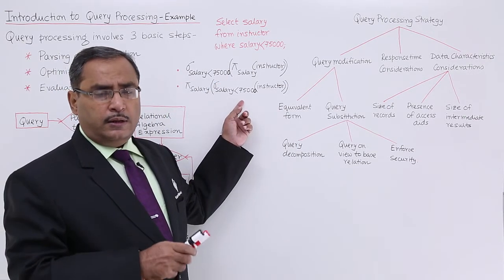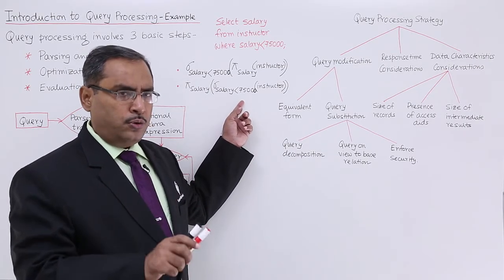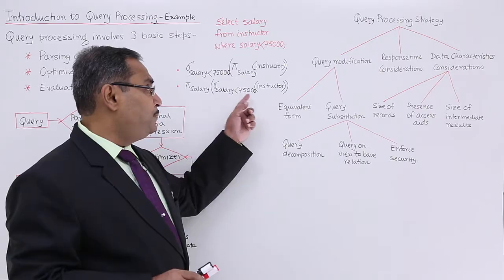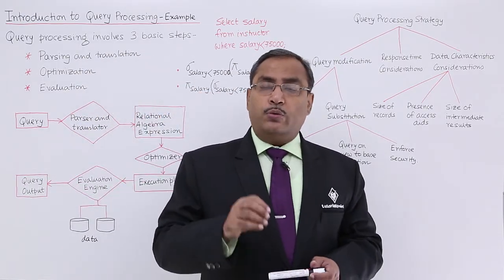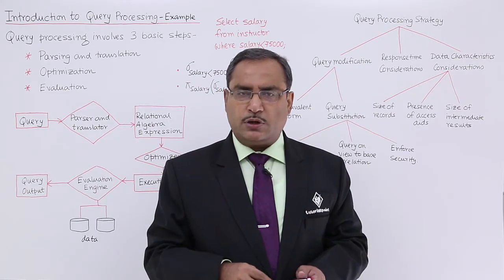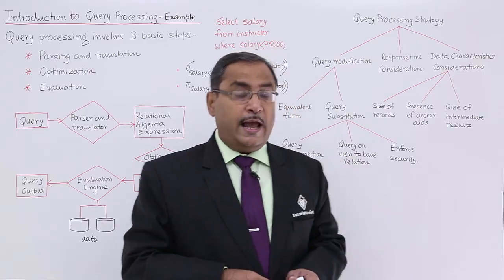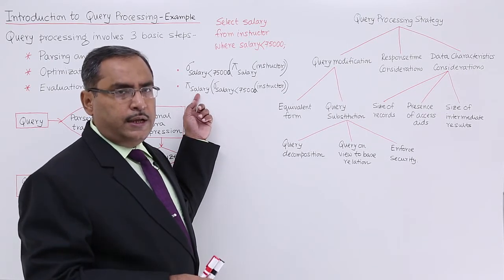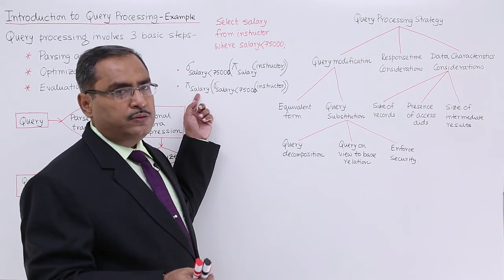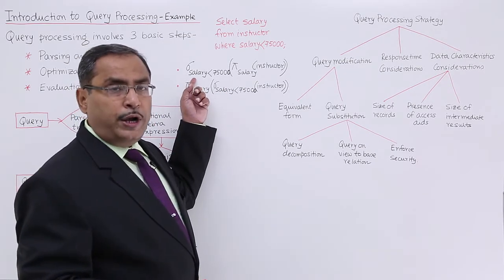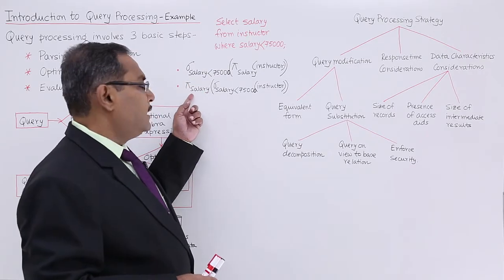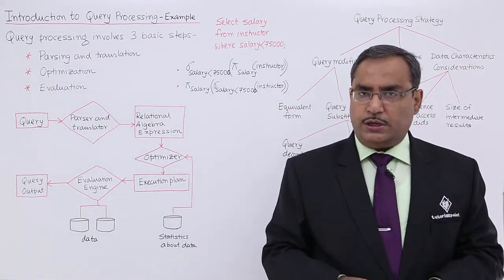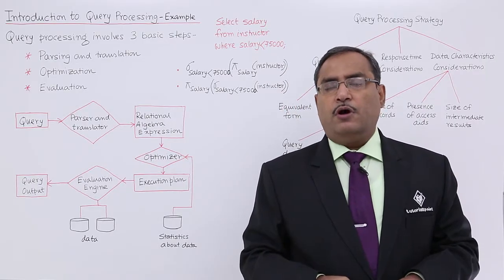Both relational algebra expressions produce the same output. But in the second expression — π(salary) applied after σ(salary < 75,000) operating on instructor — the select operation first picks only 400 records satisfying the condition. Then the projection operates on those 400 records. So the outer operator π is dealing with only 400 values rather than 5,000.